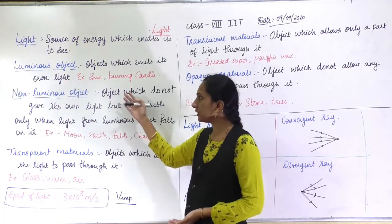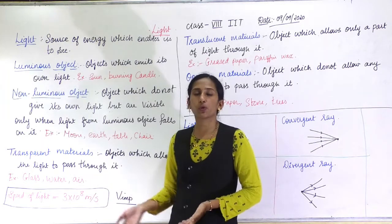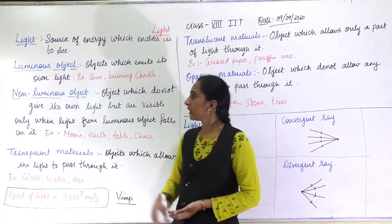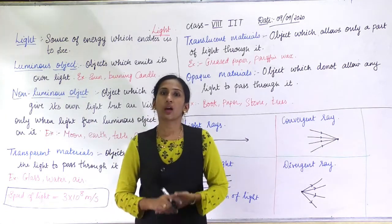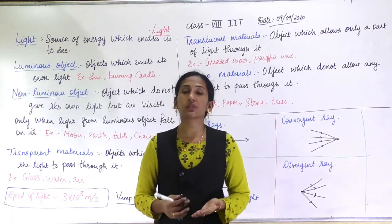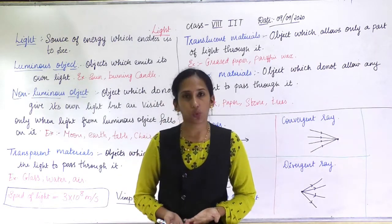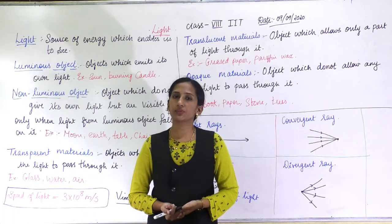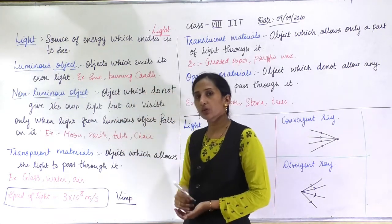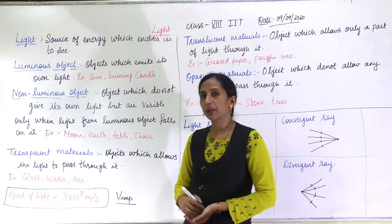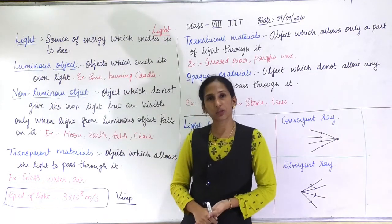Now we will discuss a few topics you may have studied earlier, before going into the main part of the lesson. Luminous objects are objects which give out their own light — they emit their own light. For example, the sun gives its own light. Other examples of luminous objects are electric bulbs and tube lights.